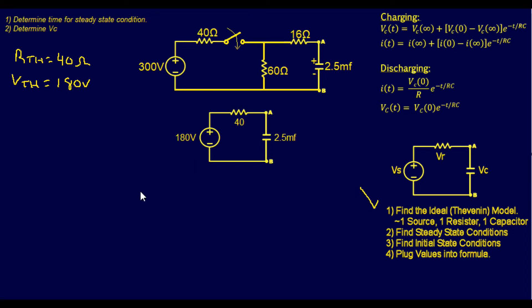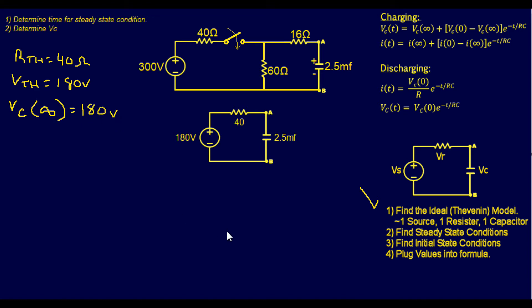Step two: find the steady state conditions. The switch closes at time zero, so steady state means the capacitor is fully charged. Since the capacitor acts as an open at steady state, VC at infinite time equals V_Thevenin = 180 volts. For the initial condition, when the switch first closes there are zero volts across the capacitor, so VC at time zero equals zero volts.